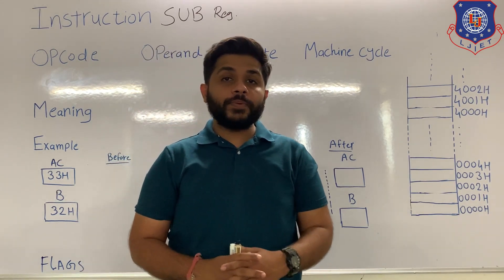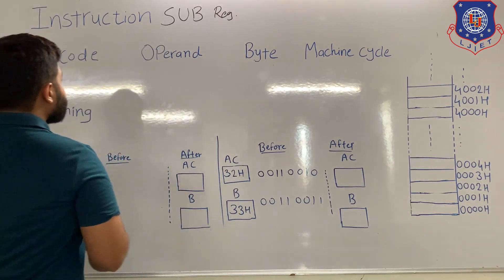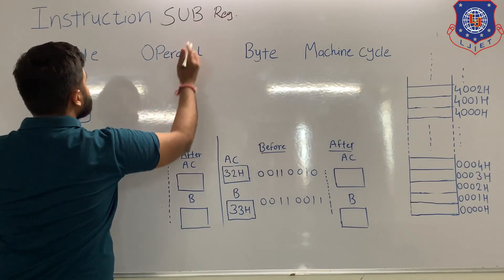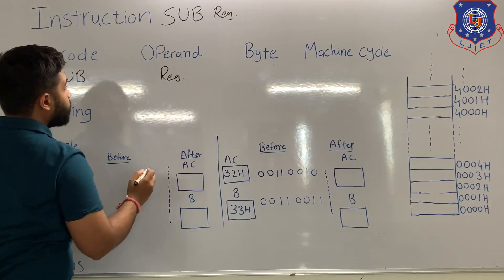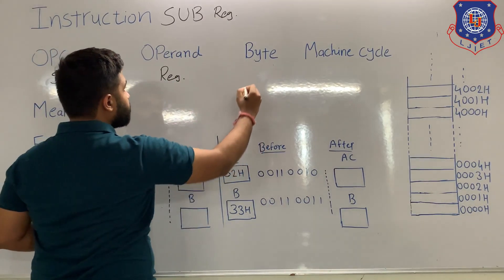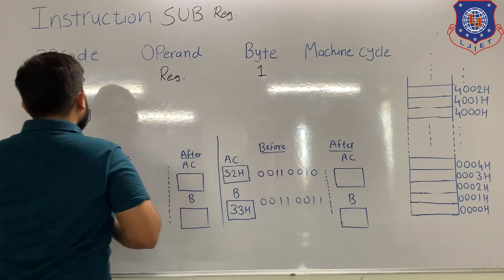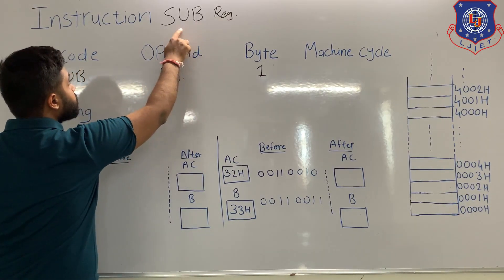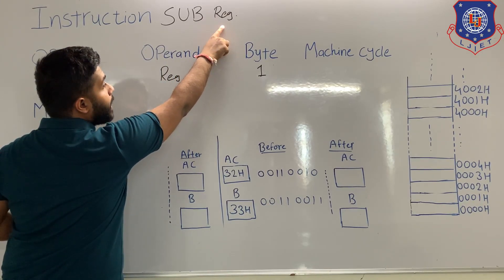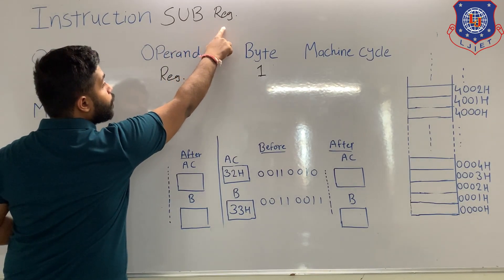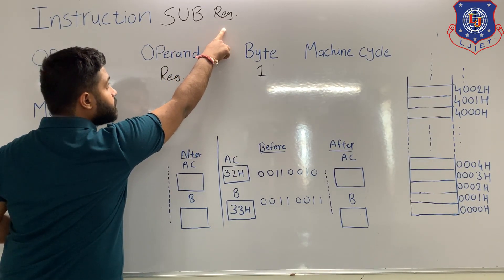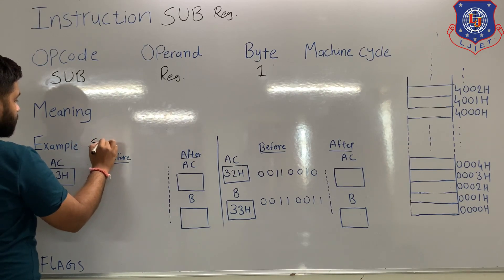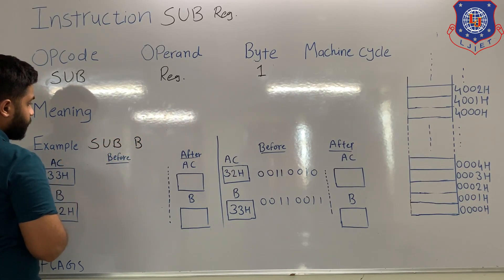We are going to see the instruction SUB register. For this instruction, the first part 'SUB' is known as opcode; the remaining portion 'register' is known as operand. For this instruction, no data can be seen, which means this instruction is of one byte. The meaning of this instruction is: subtract the content of the register from the accumulator, and the answer will be stored in the accumulator. Let's see one example: SUB B.